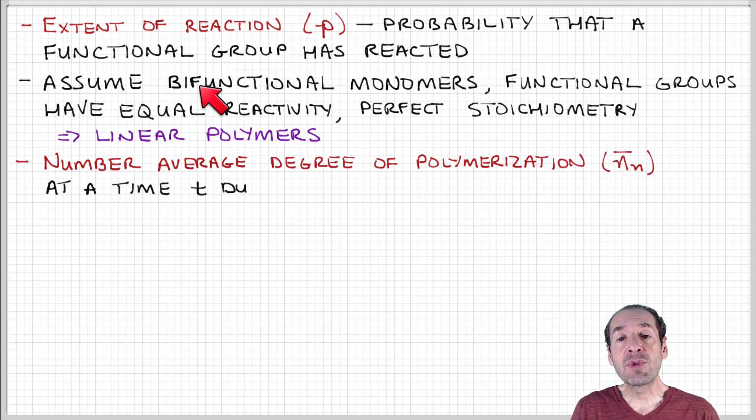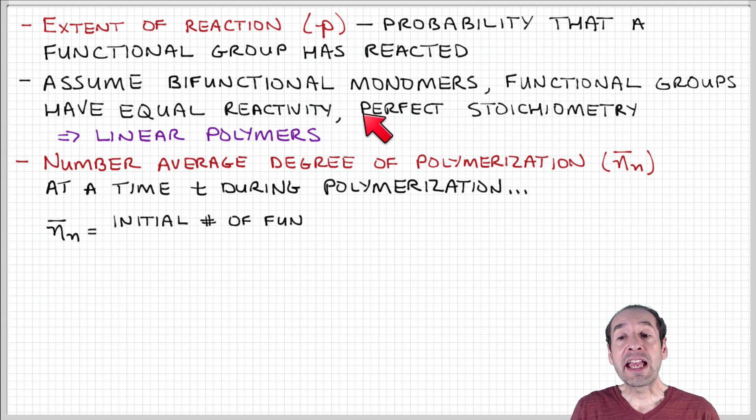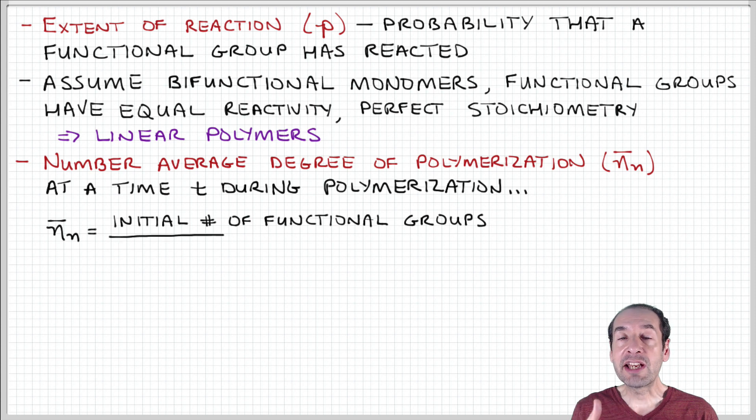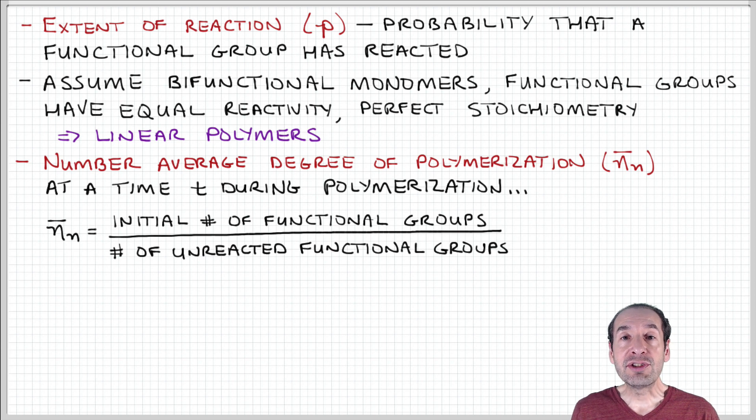Let's consider a simple case where we're assuming bifunctional monomers. The functional groups have equal reactivity, and there's perfect stoichiometry, meaning we have the same number of moles of each of the monomer units. They're all equally likely to react with each other. This is a recipe for linear polymers, as we've shown already.